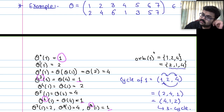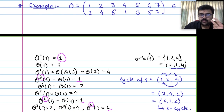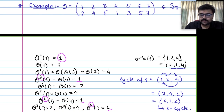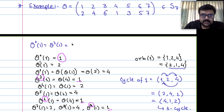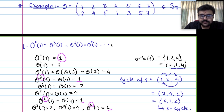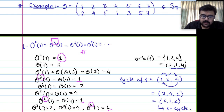Now consider elements not in the orbit of 1. We have only covered 1, 2, 4. Starting from 2: theta^0(2) = 2, theta(2) = 4, theta^2(2) = theta(4) = 1, theta^3(2) = 2 again. So L(2) = 3 as well. The orbit of 2 = {2, 4, 1} — same set as orbit of 1.